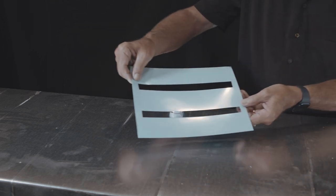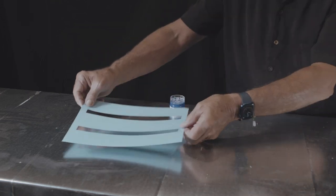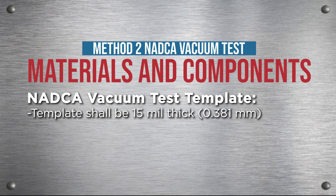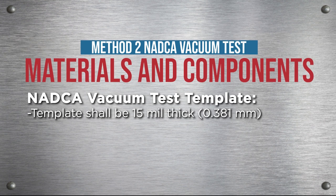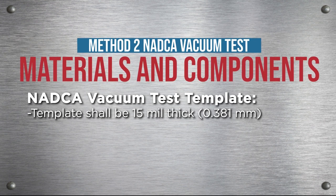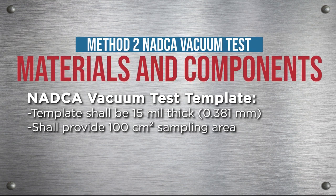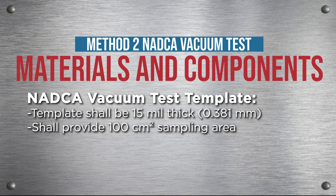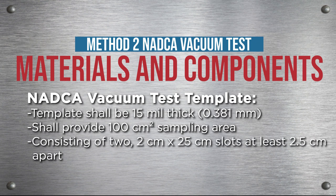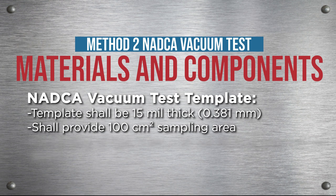NADCA vacuum test template: the template shall be 15 mil thick, 0.381 millimeters, and shall provide a 100 centimeter squared sampling area consisting of two 2 centimeter by 25 centimeter slots at least 2.5 centimeters apart.